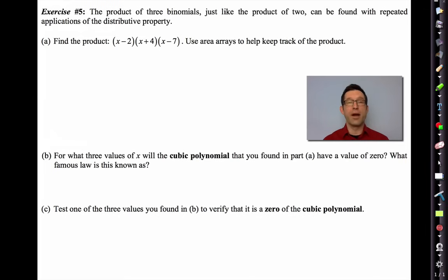Exercise 5. The product of three binomials, just like the product of two, can be found with repeated application of the distributive property. Find the product, use area arrays to help keep track of the product. So look, anytime you have the product of more than two things, it's always tricky. Forget about this just for a minute. If I simply had 5 times 2 times 7, well, you got to make a decision. Since multiplication is commutative and associative, you can choose any two to start with and then bring the third in later. So for instance, I could do 5 times 2 and get 10 times 7 and get 70. Or I could do 2 times 7 and get 14 and then multiply by 5 and get 70. I could even do 5 times 7 and get 35 and then multiply by 2 and get 70.